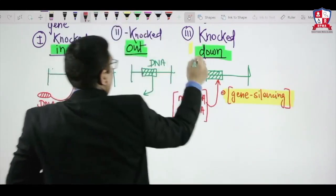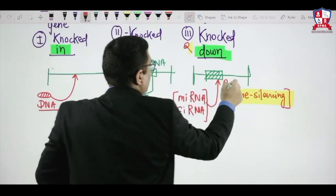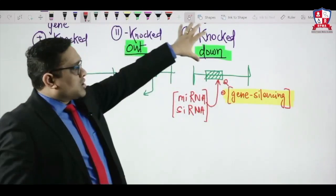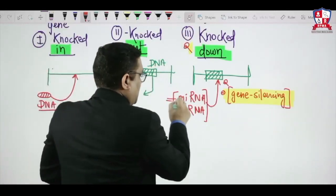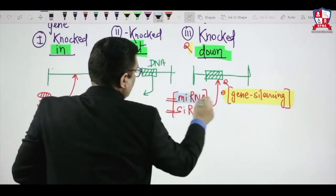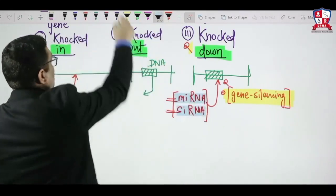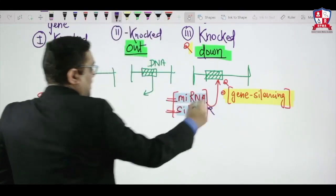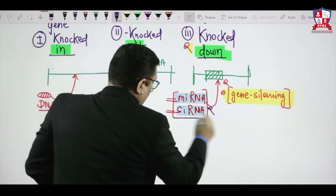That was the question in AIMS exam 2016. The question was: Knocked Down is done by which of the following RNA? MiRNA, siRNA—these were the options given in AIMS exam. SiRNA is associated with gene knockdown.